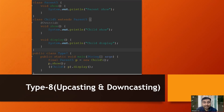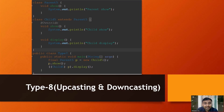Type 8 is upcasting and downcasting. Parent class has a show method; child class extends parent and overrides show, and also has a display method. We create a child object stored in a parent reference and call show() — the overridden show method is called, printing 'child show'. Then we downcast to child type and call display(), printing 'child display'. Outputs: 'child show' then 'child display'.